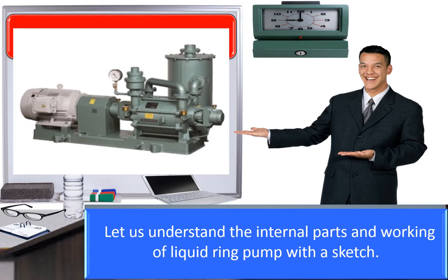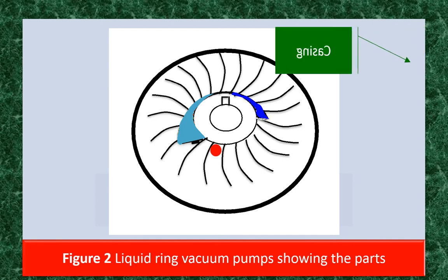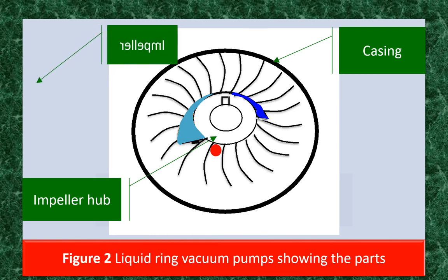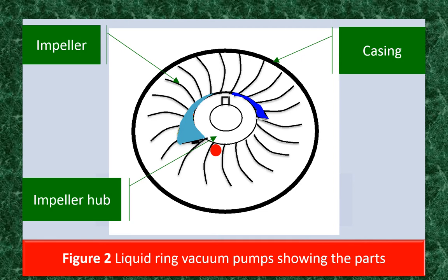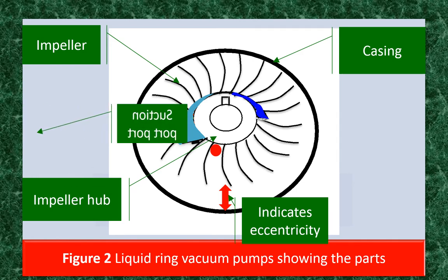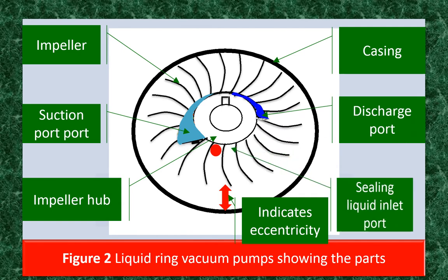Let us understand the internal parts and working principle of a liquid ring vacuum pump. A liquid ring pump has an impeller with blades attached to a center hub, located in a cylindrical body but offset from the center. Note: the casing or pump body is eccentric with the impeller hub. The impeller sits between two end plates called port plates, which have shaped holes called ports. The light blue shaded area is the suction port, the dark blue shaded area is the discharge port, and the red dot at the center is the sealing liquid inlet port.